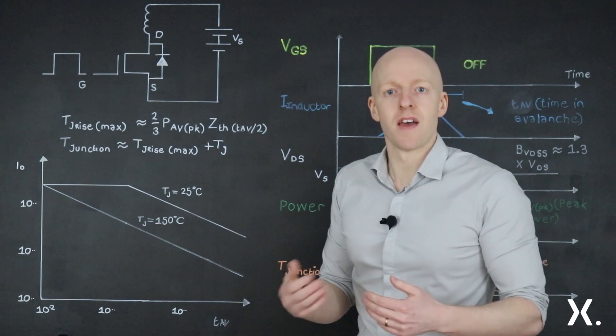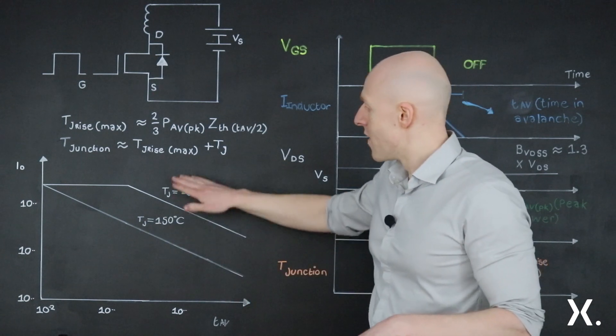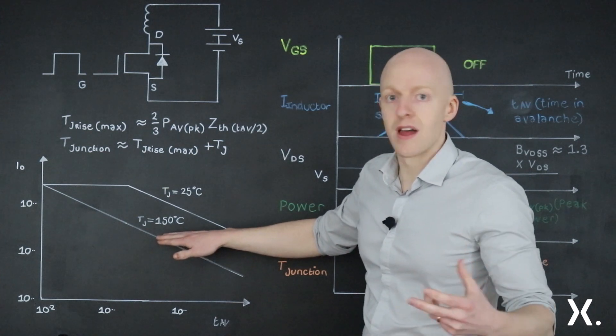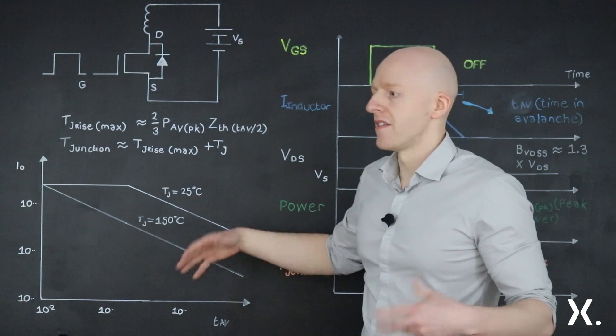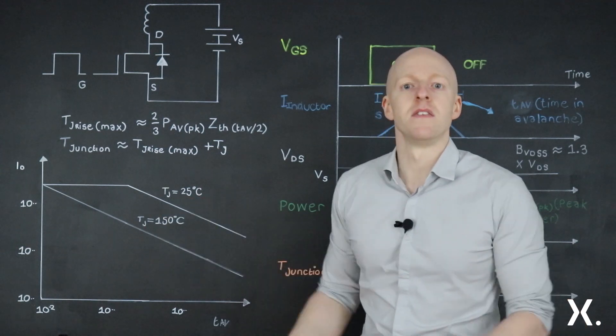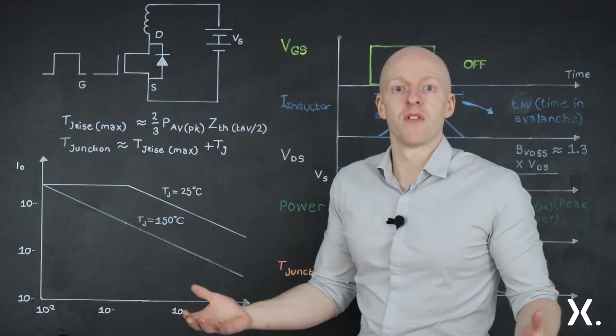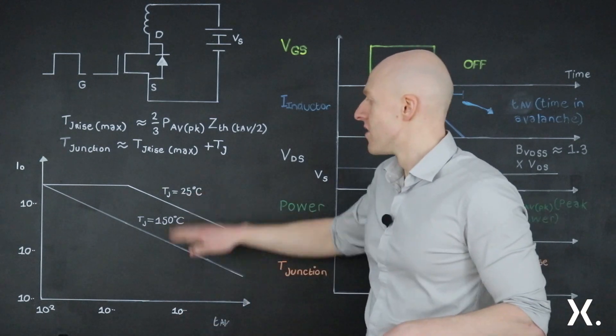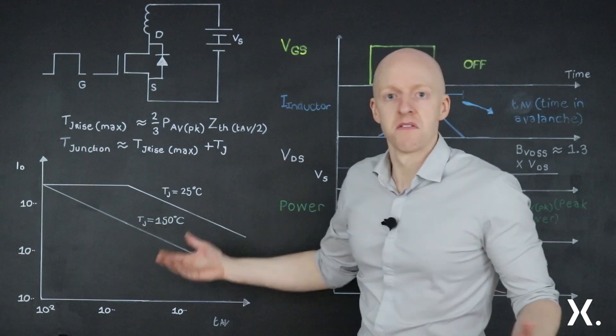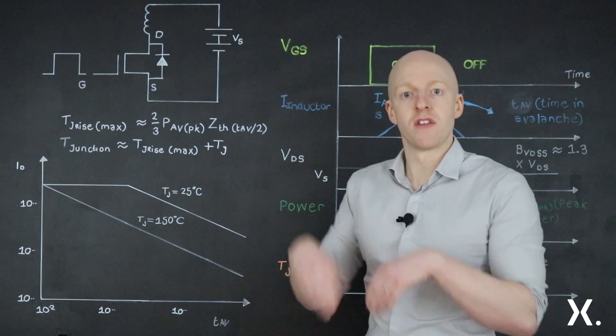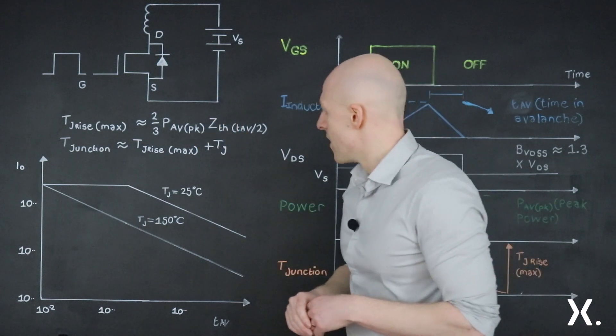Now, because ultimately it is a temperature rating that we are limiting here, we've put a second line in just to illustrate that point. And to say, if you're starting at a higher ambient temperature, say for example, if your application is in the engine compartment, you know that the potential there for the ambient is going to be much higher than 25, then you're going to get a much reduced avalanche capability, because it would take less energy to reach that maximum junction temperature rating of the MOSFET.